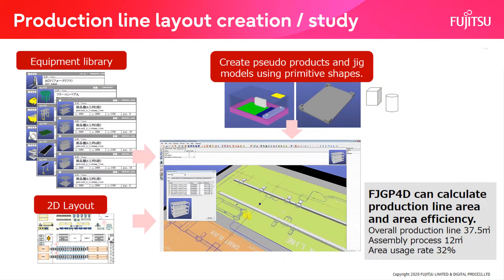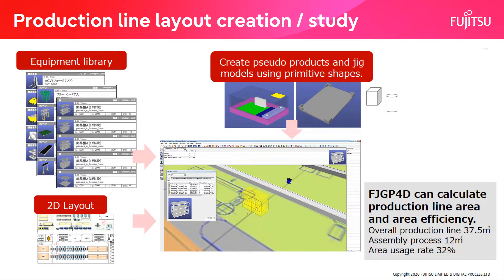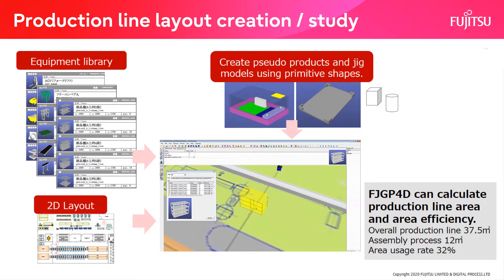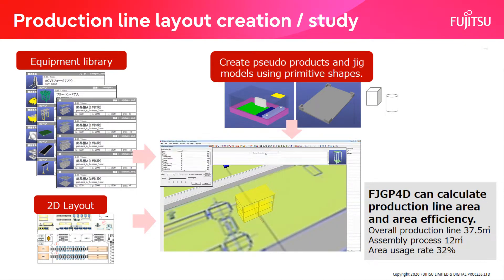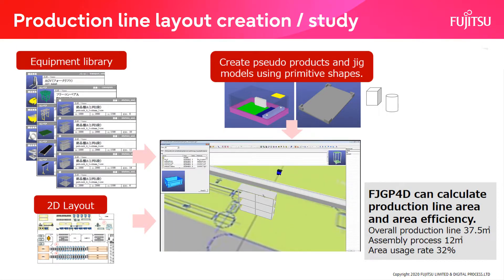FJGP4D can be used even when data cannot be prepared by 3D CAD. By using the FJGP4D library function, you can create a simple 3D shape assuming a product and express the layout of equipment. The models used from the equipment library can be resized to represent the layout of your production line close to the actual size.